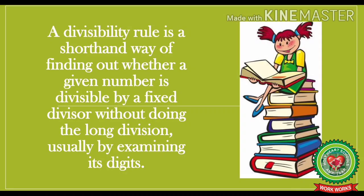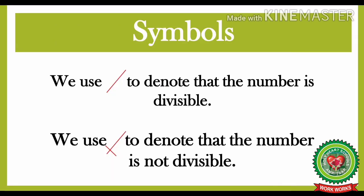A divisibility rule is a shorthand way of finding out whether a given number is divisible by a fixed divisor without doing the long division, usually by examining its digits. We must remember we use this symbol to denote that the number is divisible, and we use this symbol to denote that the number is not divisible.